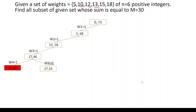If 13 is not added to the subset, the existing elements are weights w1, w2, and w3 — that is 5, 10, and 12 — so the total sum is 27. The remaining weight, since we are not adding 13, is 15+18, which equals 33. That is how you get 27 and 33 at this node.